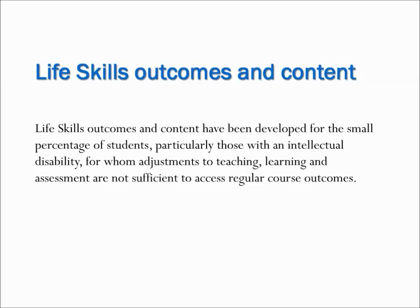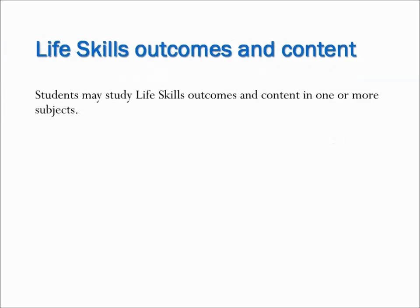Students who are unable to access regular course outcomes, even with adjustments, may follow life skills outcomes and content. The decision for a student to follow life skills outcomes and content can be made at any time during Year 7-12, and the choice can be made for a single course or multiple courses.